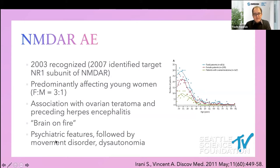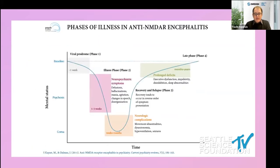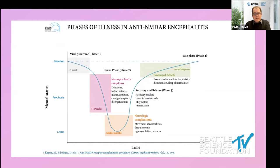The typical presentation of NMDA receptor autoimmune encephalitis includes psychiatric features followed by a movement disorder and dysautonomia. There is a viral prodrome that can look exactly like encephalitis or meningitis, followed by neuropsychiatric symptoms including delusions, hallucinations, mania, agitation, changes in speech, and disorganization lasting one to three weeks on average. This can progress if untreated into movement disorders, dysautonomia, hypoventilation, seizures, and coma. Recovery is slower than onset and can take months or years and may not be complete.